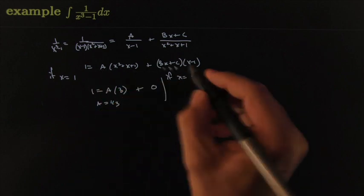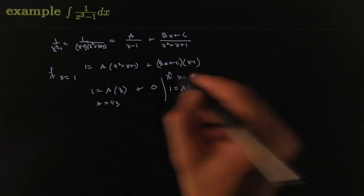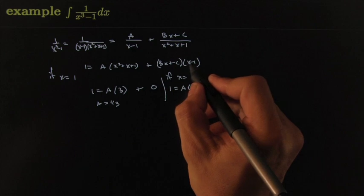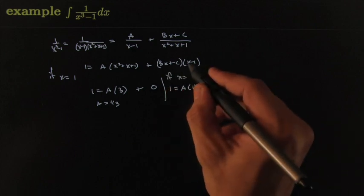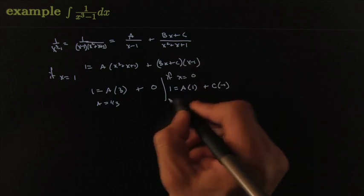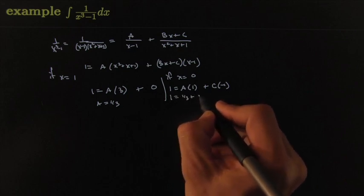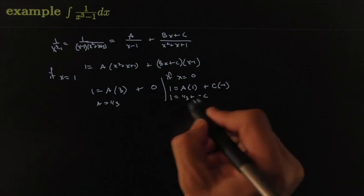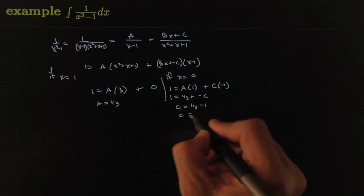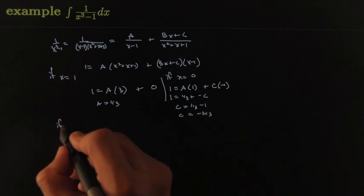What if x = 0? Then 1 = A(1) plus the Bx term becomes zero and x-1 becomes negative one, so you're left with C times -1. We agreed A = 1/3, so 1 = 1/3 + (-C), or C = 1/3 - 1, giving C = -2/3.